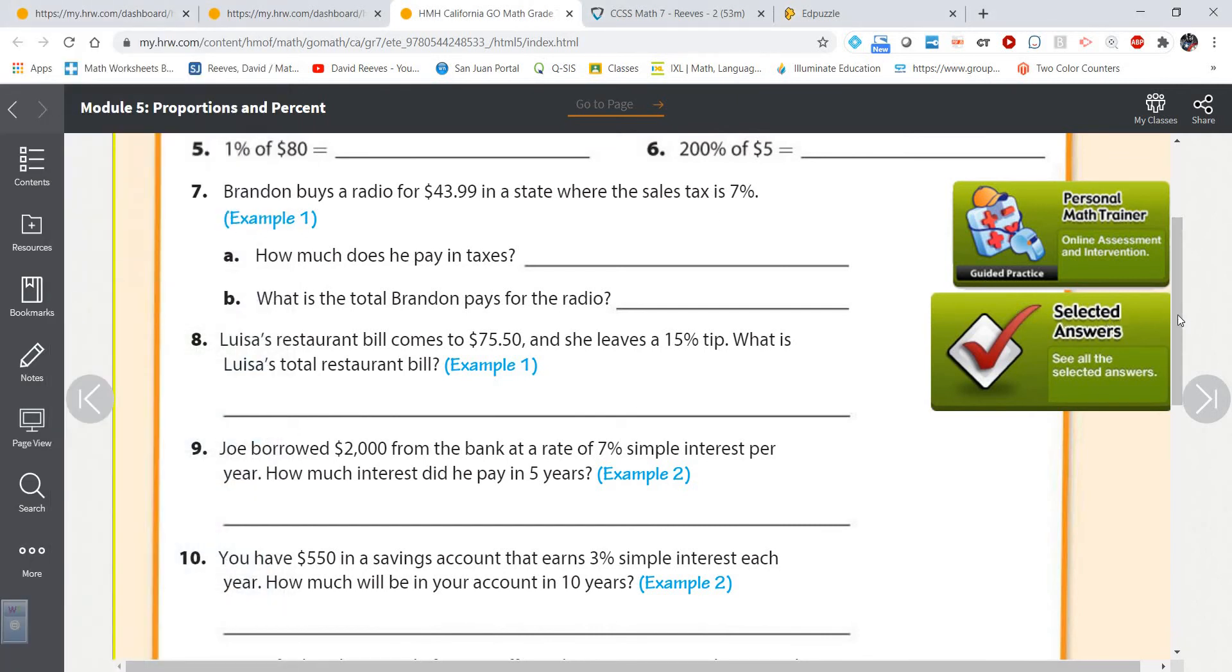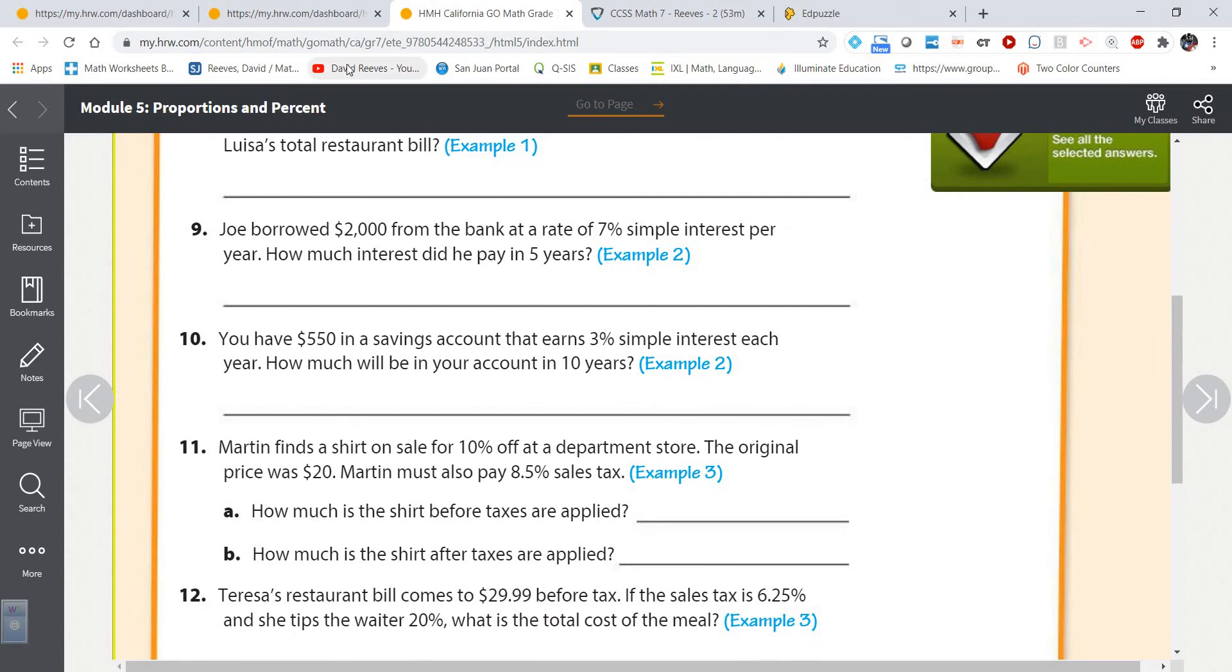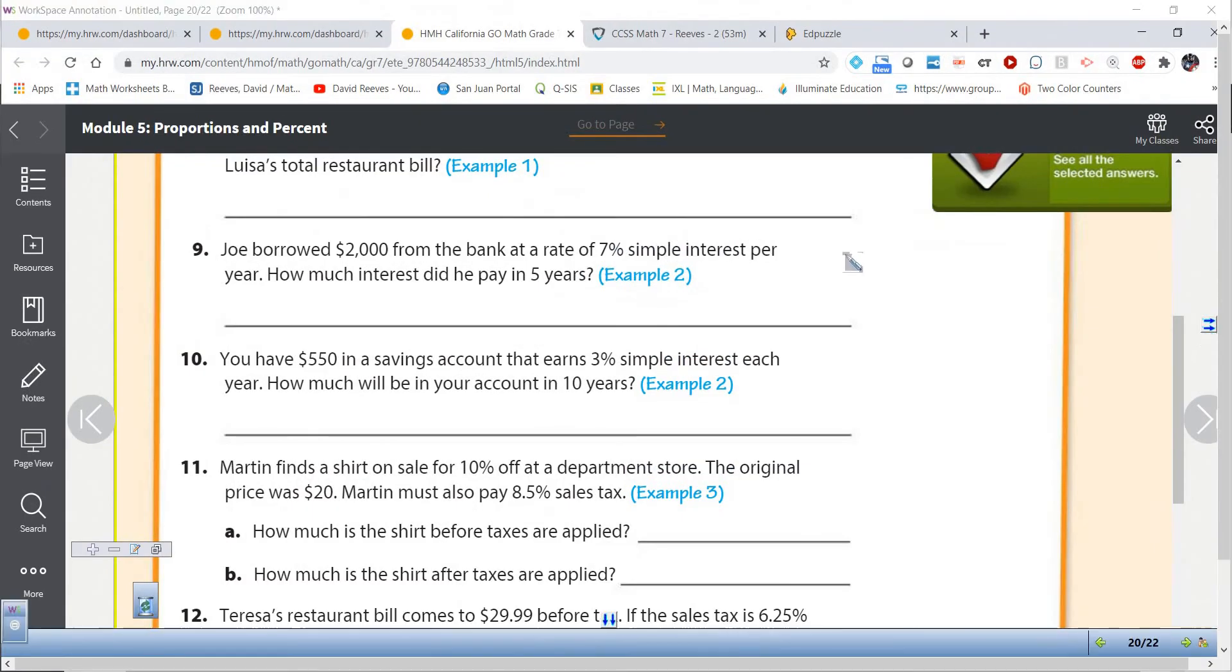Let's take a look at this next problem. Joe borrowed $2,000 from the bank at a rate of 7% simple interest. How much did he pay in five years? If you watched my previous videos, we have P, we have R, we have T. P stands for the principal. The principal is $2,000. The rate is 7% and the time is five years.